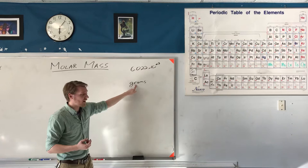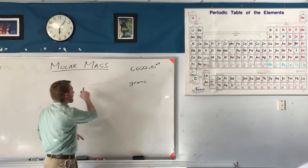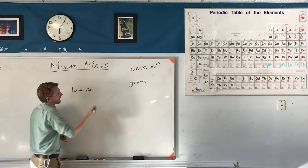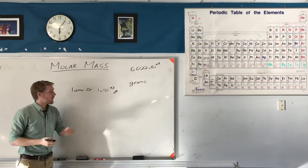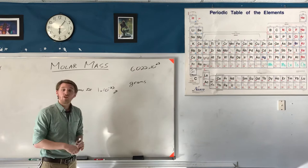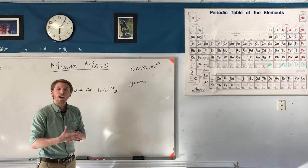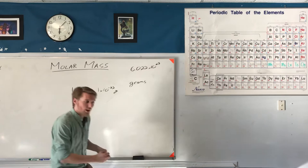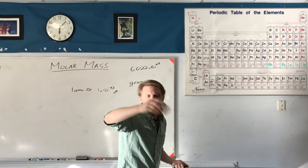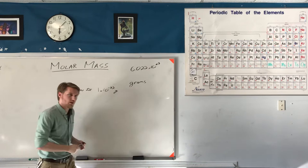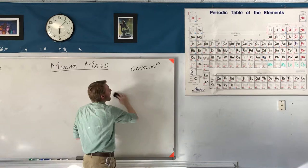It's hard to measure out grams in terms of atomic mass units, because one atomic mass unit is approximately 1 times 10 to the negative 23 grams — very, very small. An atomic mass unit weighs a very small amount compared to a gram. So we would rather measure in terms of moles, get these really large bundles, and then see how much each bundle weighs in grams.